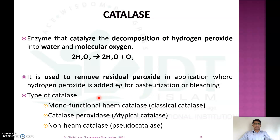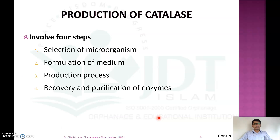There are different types of catalase: monofunctional heme catalase, also known as classical catalase; catalase peroxidase, also known as atypical catalase; and non-heme catalase, also known as pseudo catalase. Now let's discuss the production of catalase by fermentative method.